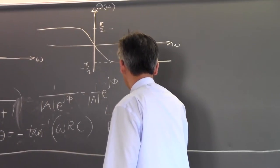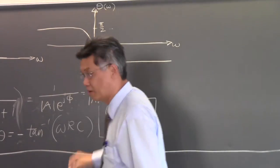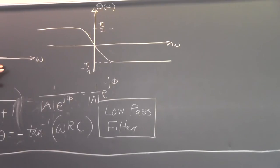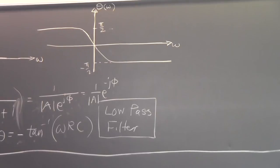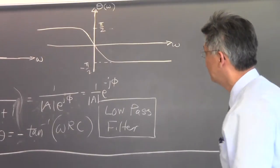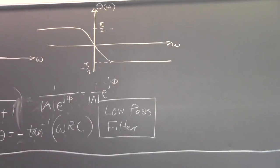Why is it called a low-pass filter? The reason is that only the low-frequency signals can pass through the system. When the frequency is high, the frequency response is very small — you have to multiply the input by a very small number to get the output. So only the low-frequency signals go through. The phase is something harder to understand, but let's try to understand physically why the frequency response behaves this way.